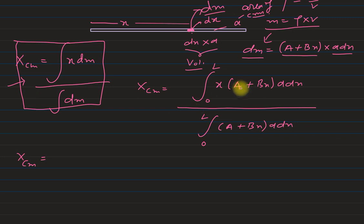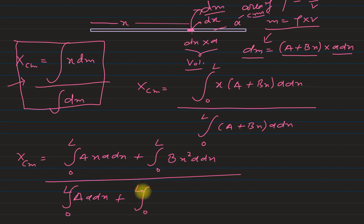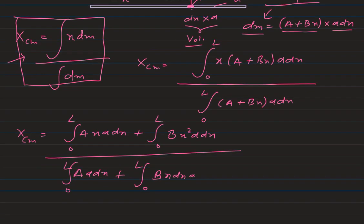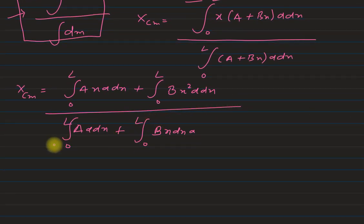So we will integrate that expression and get our answer for the x-coordinate of center of mass. So after integrating, the expression becomes, in the numerator, ∫₀ᴸ ax α dx plus ∫₀ᴸ bx² α dx. And in the denominator, we have ∫₀ᴸ a α dx plus ∫₀ᴸ bx α dx. So α is the area of cross-section, which is in numerator and denominator both. So it will cancel out.